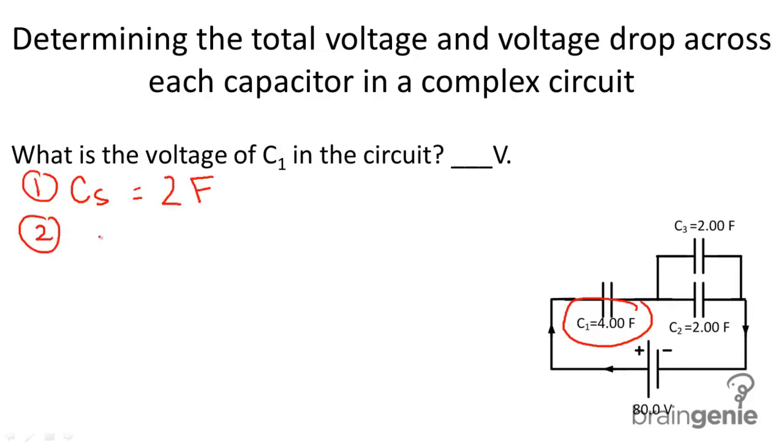Our second step is going to be determining the total charge. Okay, so we get that from C equals Q over V and Q was equal to C times V. And we determined that to be equal to 160 Coulombs in the previous problem.